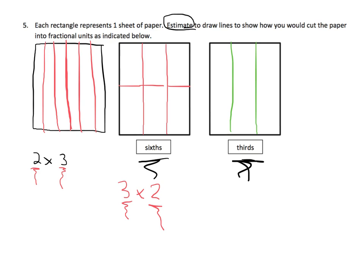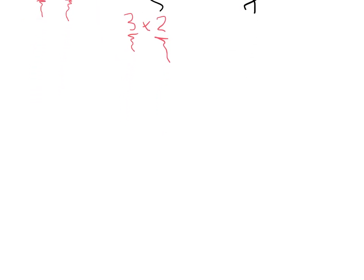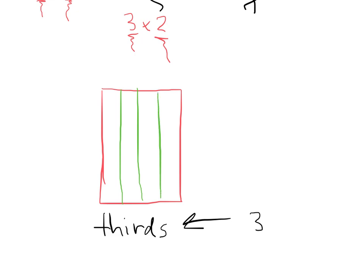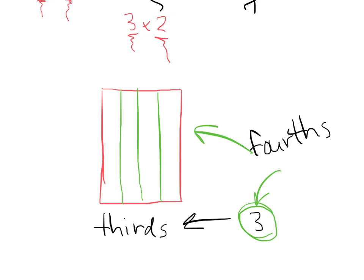Parents and teachers, be careful: sometimes students asked to draw thirds will accidentally draw fourths instead. They see the number three and draw three lines — but that actually creates four equal parts, not three. So the fraction is fourths, not thirds. This is a super common mistake to watch for.